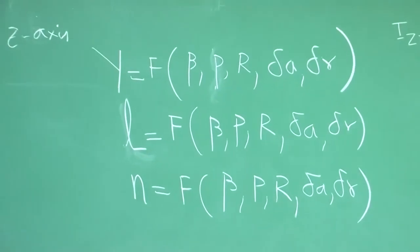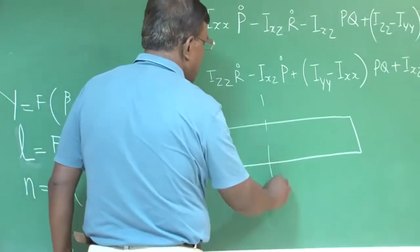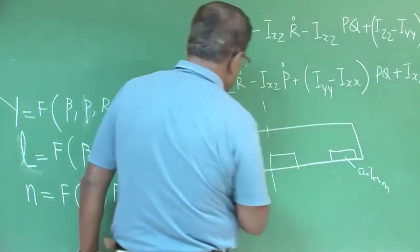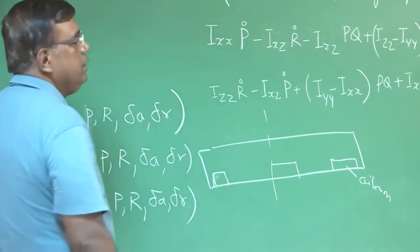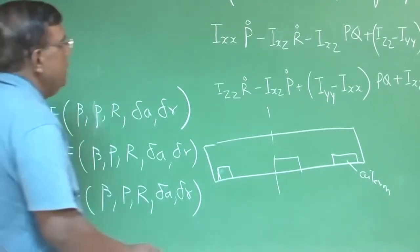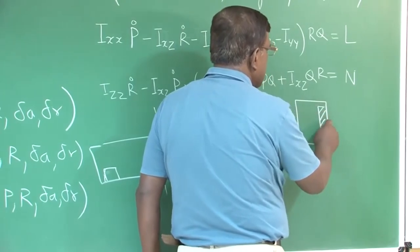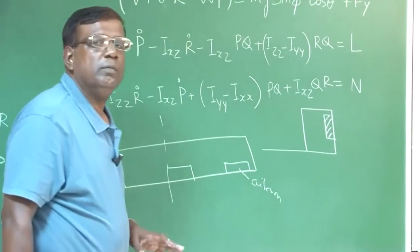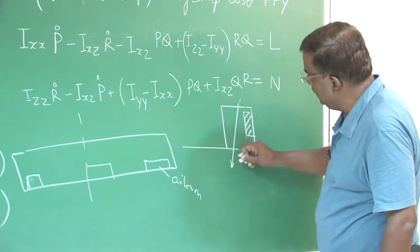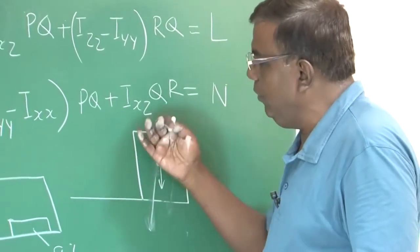Delta_a is the aileron deflection. On my wing, there is a flap and there is an aileron. By deflecting the aileron, I can generate a rolling moment.